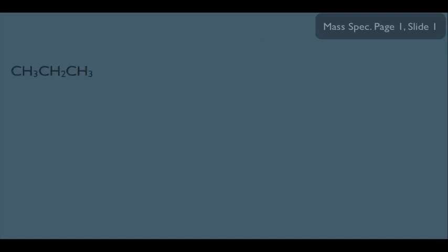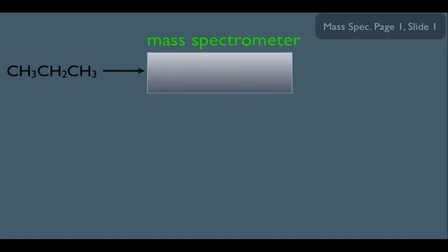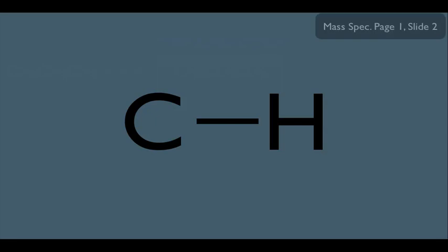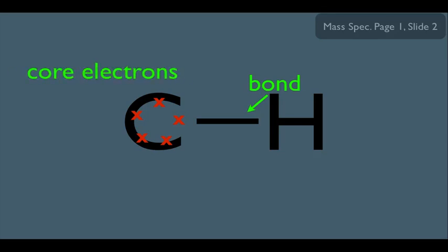Let's say we find some unknown substance and we don't know what it is — let's pretend it happens to be propane. A good place to start is finding the molecular weight. So we take our unknown mystery substance and stick it in the mass spectrometer. Now, remember this is a C-H bond. Carbon has six electrons total. Some are core electrons — electrons around carbon not involved in a bond — and the others are bonding electrons. For the mass spec, we distinguish core electrons from bonding electrons.